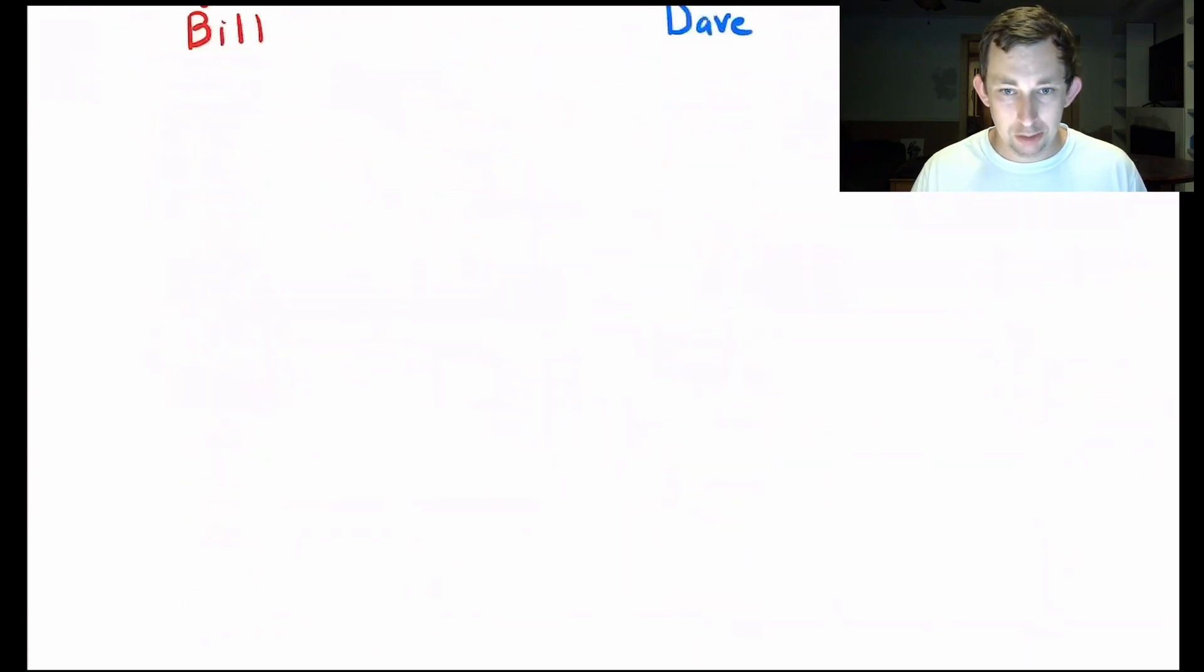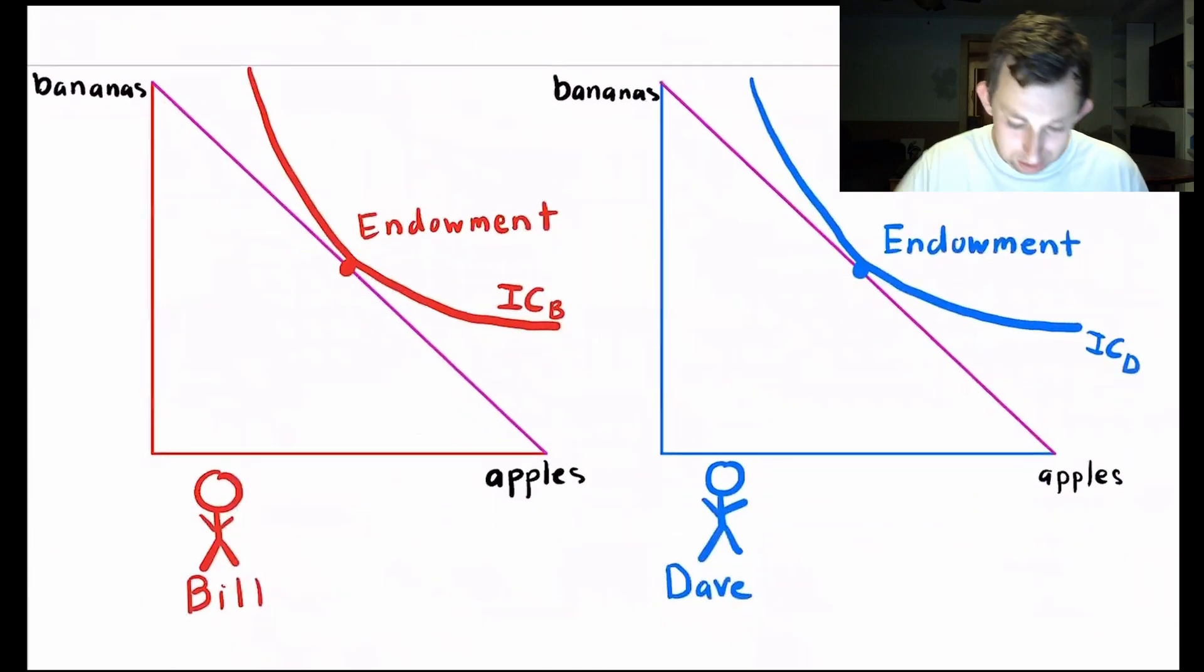Now the way we're going to draw this Edgeworth box is I'm going to come down here. I'm going to erase this bananas word. I'm going to erase this apples word just to make it a little cleaner.